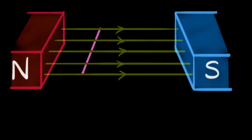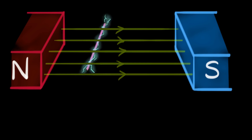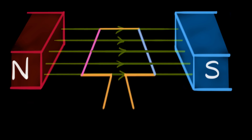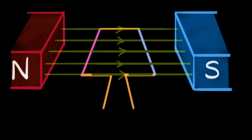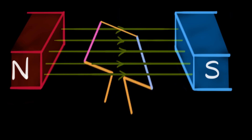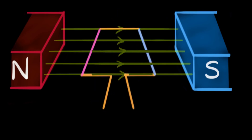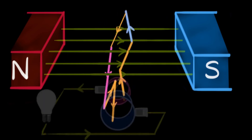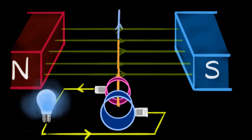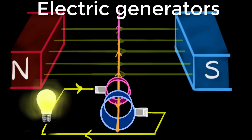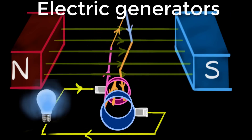The basic idea is that if you take a wire and move it up or down inside a magnetic field, it induces an electric current. So all we have to do is attach a coil of wire to these giant turbines and place them inside a magnetic field. As the turbine rotates, the coil starts rotating and the wires start moving up and down inside the magnetic field, producing the electric current. These devices are called electric generators — they convert spinning or mechanical energy into electrical energy.